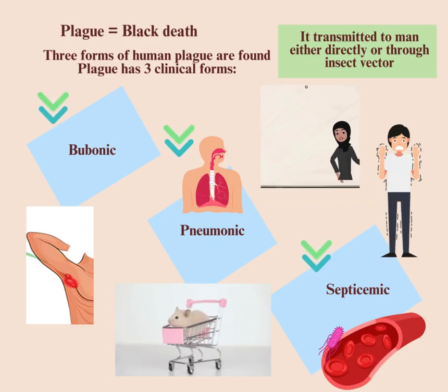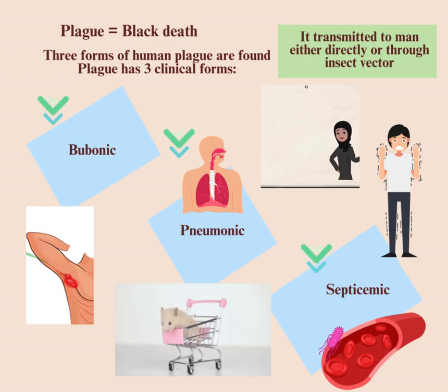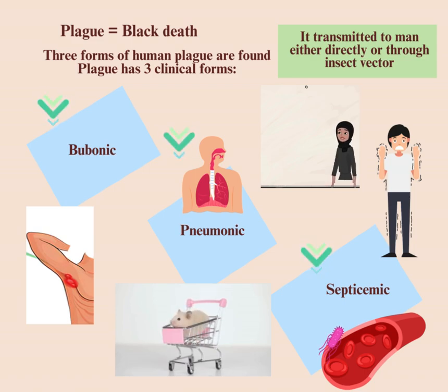Three forms of human plague are found. Plague has three clinical forms: one, bubonic plague; two, pneumonic plague; three, septicemic plague.